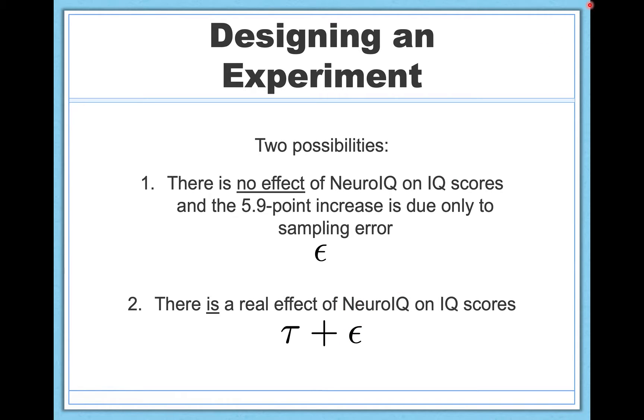A second possibility is that NeuroIQ actually is effective in changing people's IQ scores. There is a real effect. So in this case, we can represent that by tau, this symbol here meaning real effect, plus epsilon. Notice that we still have sampling error. This is important to understand because even if there is a real effect in the population and we're successfully picking up on that real effect, it doesn't mean that we're going to necessarily measure that real effect perfectly.